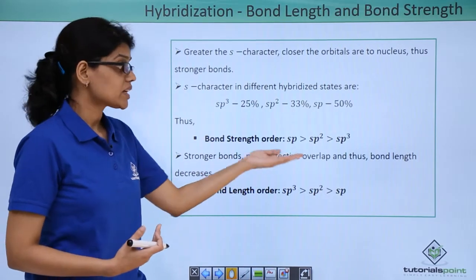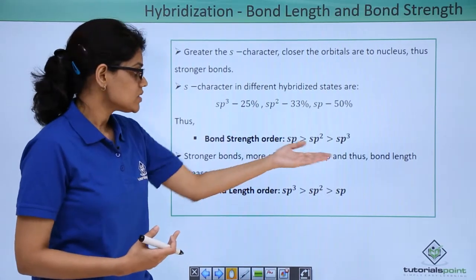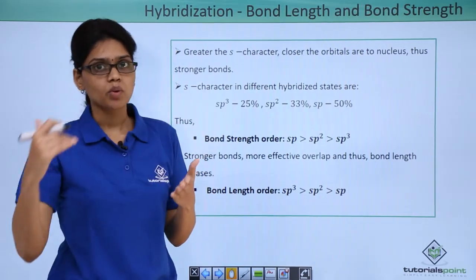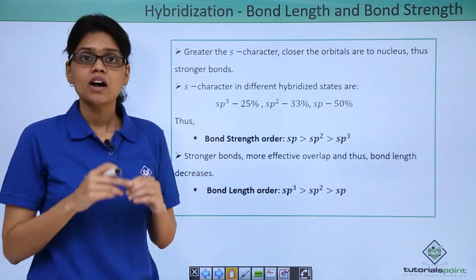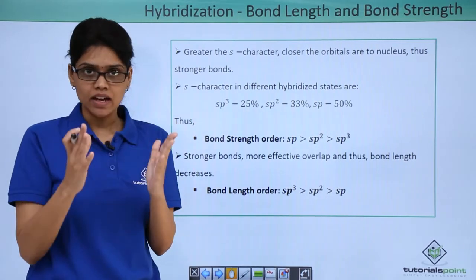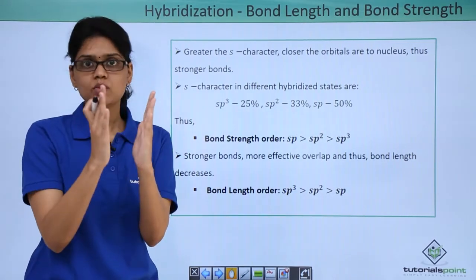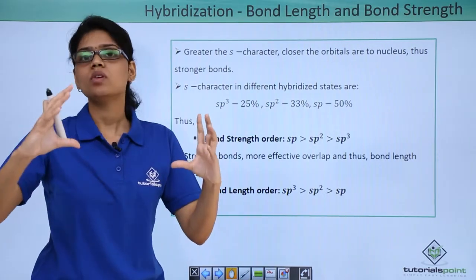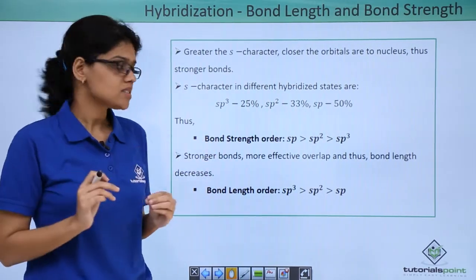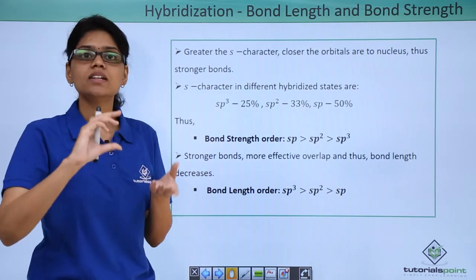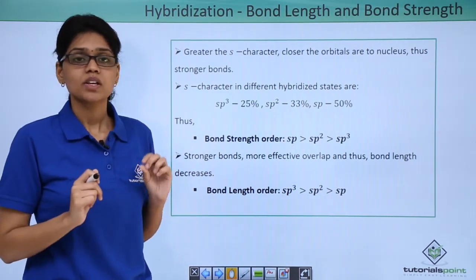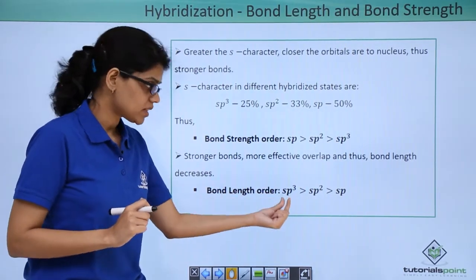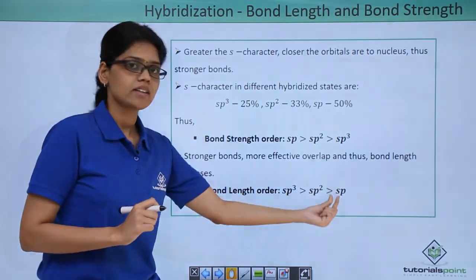Stronger the bonds, more effective the overlap is, and thus the bond length decreases. Bond strength and bond length are inversely related to each other. If the bond strength is very high, that means the bonds are closer to each other. If the overlapping is weak, the bonds are farther from each other. So the bond length order reverses: sp3 > sp2 > sp.